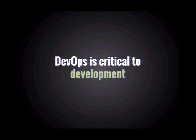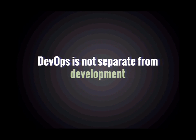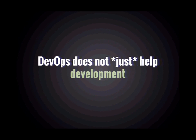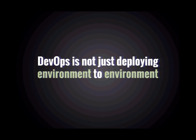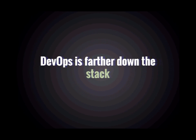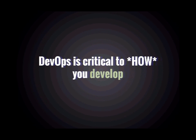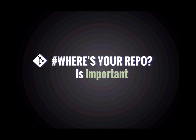DevOps is critical to development. What I mean is DevOps is not separate from development. It's not a separate process just there to help with development. It's not something you don't worry about until you've developed your site, the client's pretty happy, and then you have to do the DevOps stuff to get it deployed. It's not just deploying your code from environment to environment. DevOps is farther down the stack than you might ordinarily think. DevOps is critical to how you develop — the very process with which you develop, to the nature of your development. And for this reason, where you put your repo is really, really important.